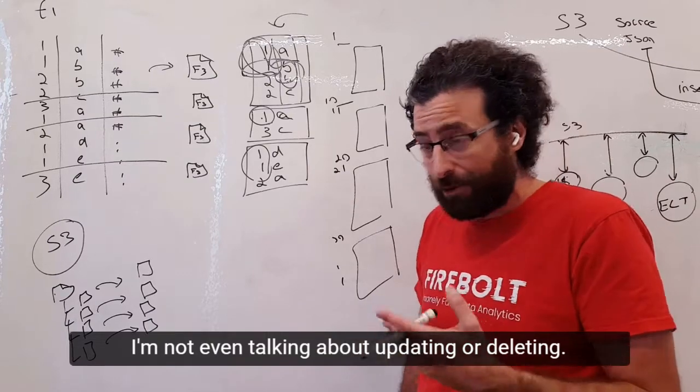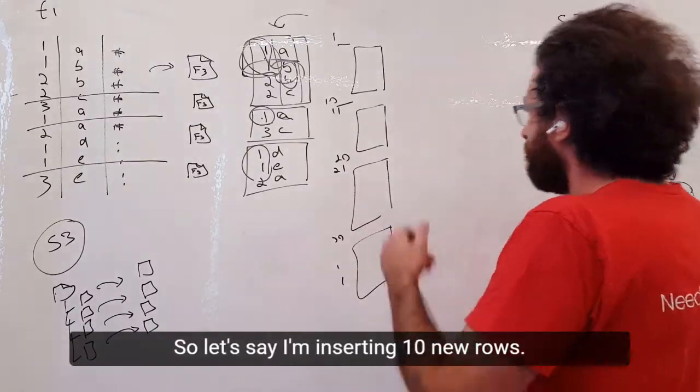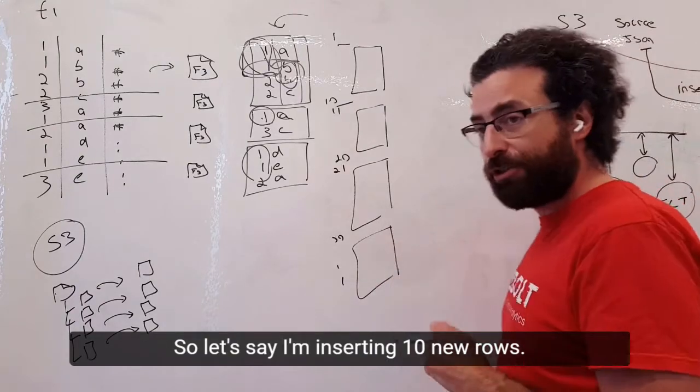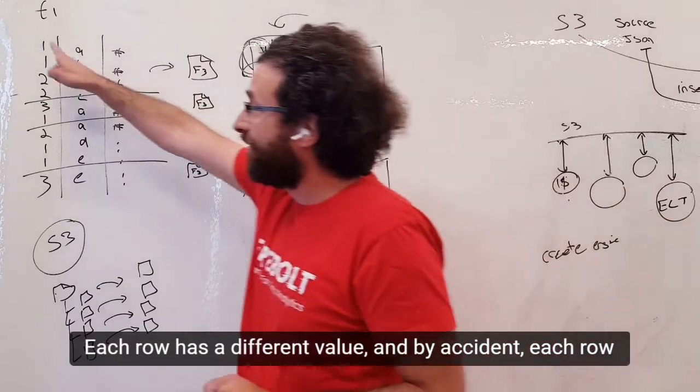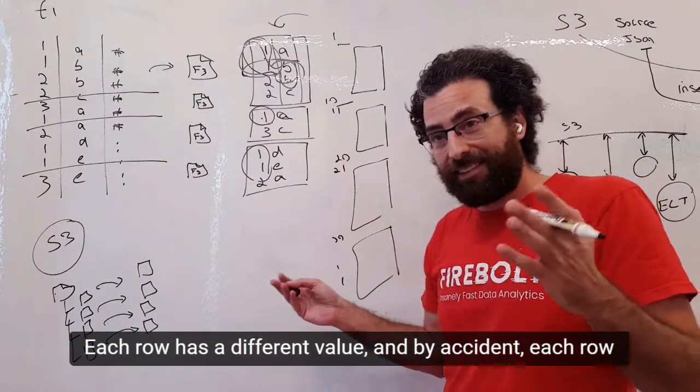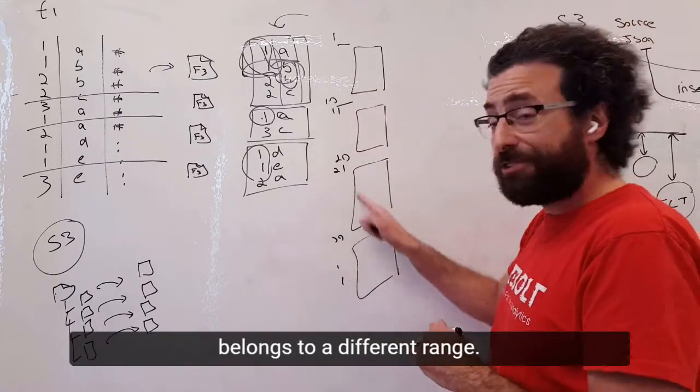I'm talking about inserting new data. So let's say I'm inserting 10 new rows, each row has a different value, and by accident each row belongs to a different range.